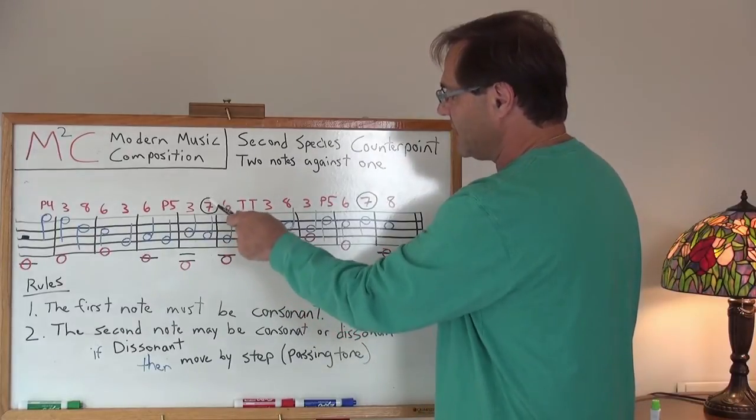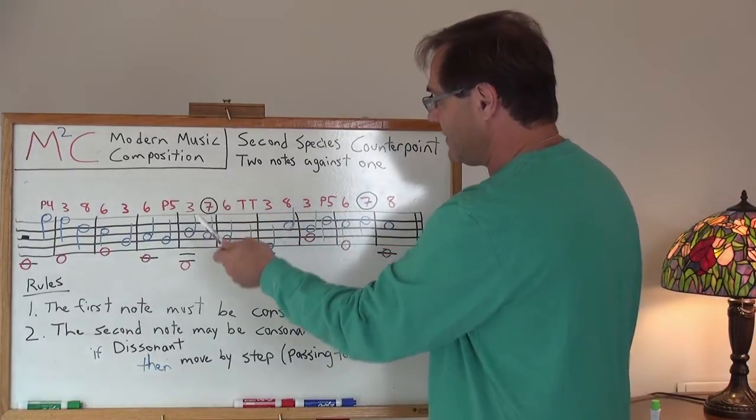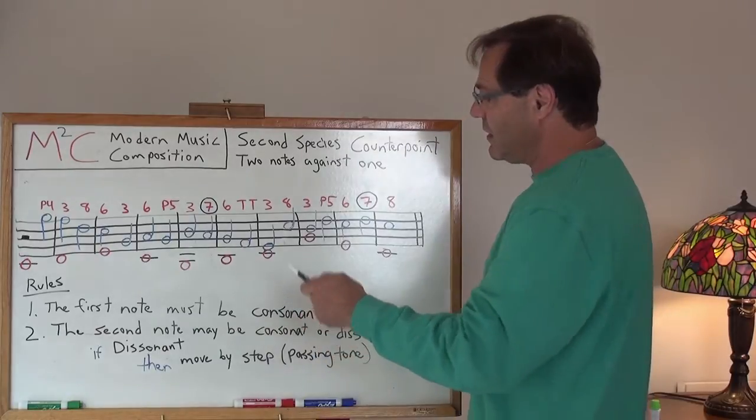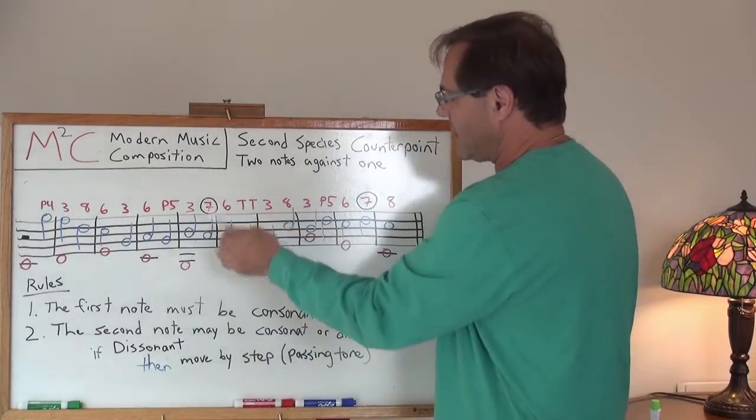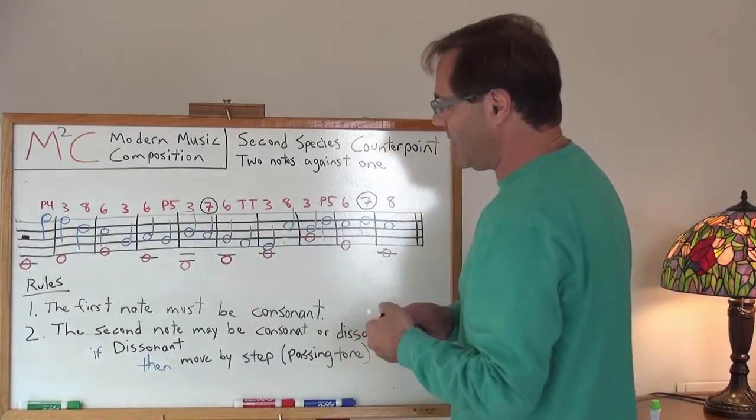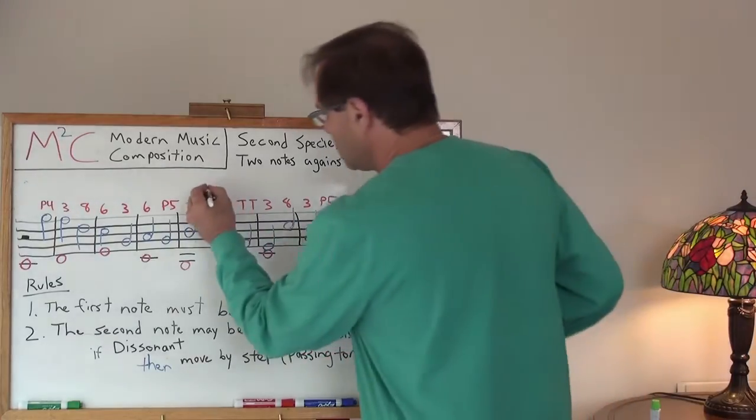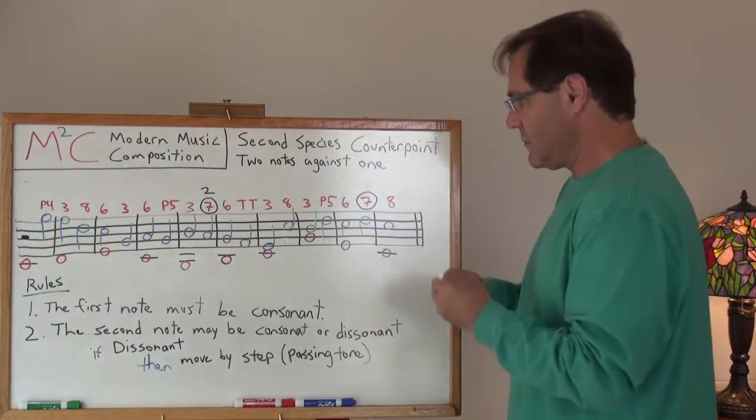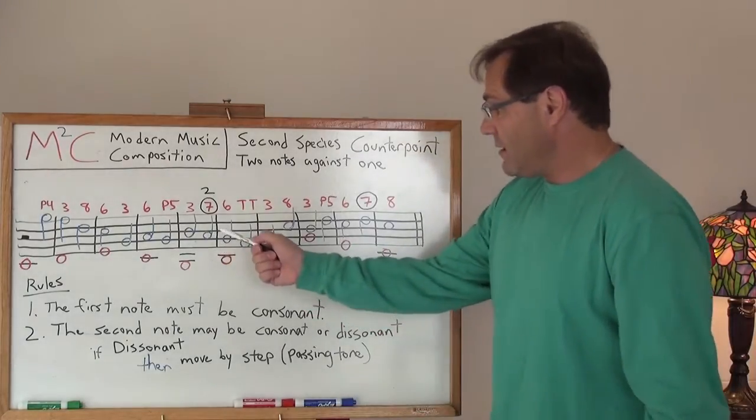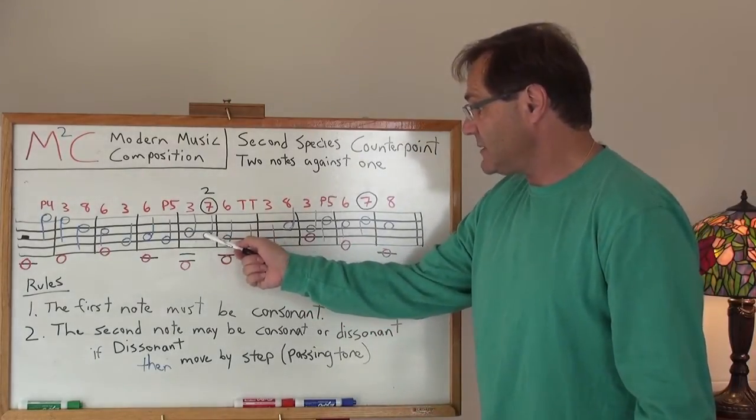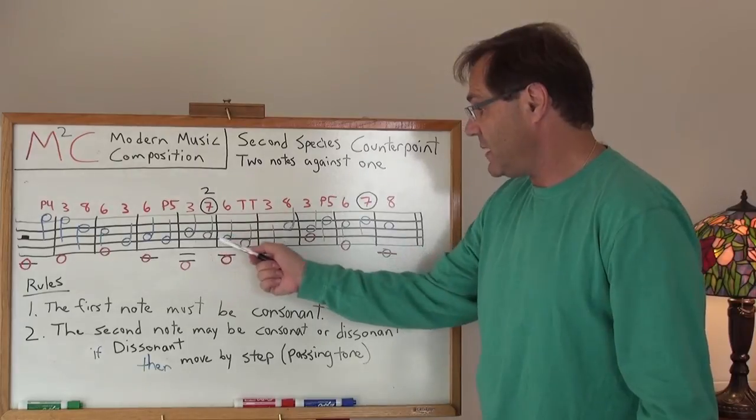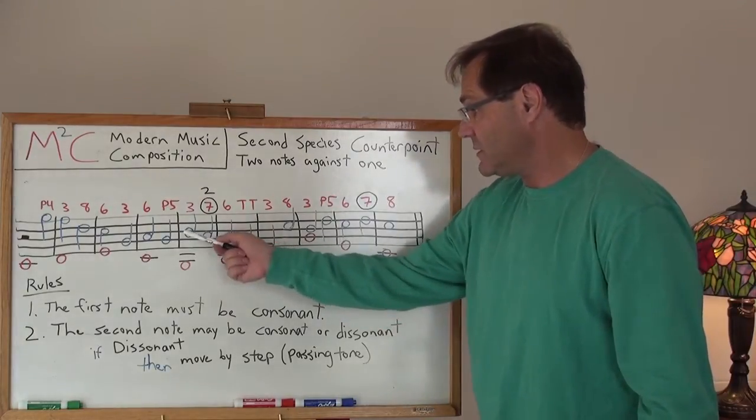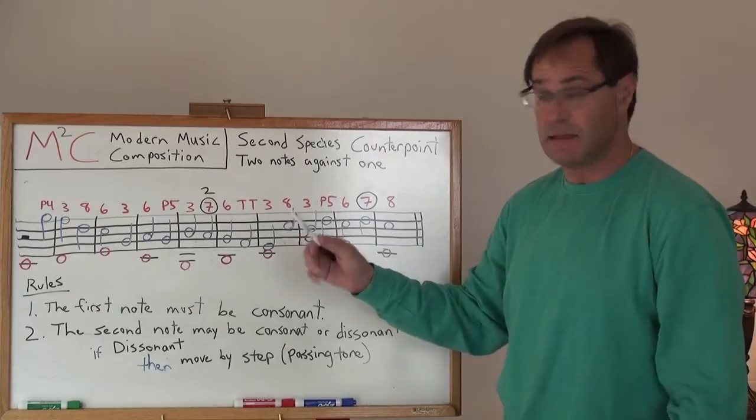And so I've just highlighted the fact that I've got this seventh. You can look at it as a seventh too. Actually, a G to an A would be a second. There we go. So then this A is acting as a passing tone between the previous B and then onto a G. You can see how that cascades down as a passing tone.